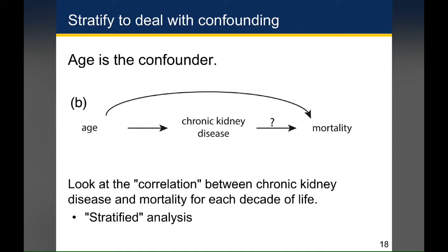If you didn't take into account age, what you'd actually find is that people who have chronic kidney disease are on average older than those who don't, and therefore it looks like these people are definitely going to be at higher risk of dying. But if you limit your analysis to 40-year-olds with chronic kidney disease and compare them to 40-year-olds who don't have chronic kidney disease, that will give you a more accurate assessment of whether chronic kidney disease itself raises your risk of dying.